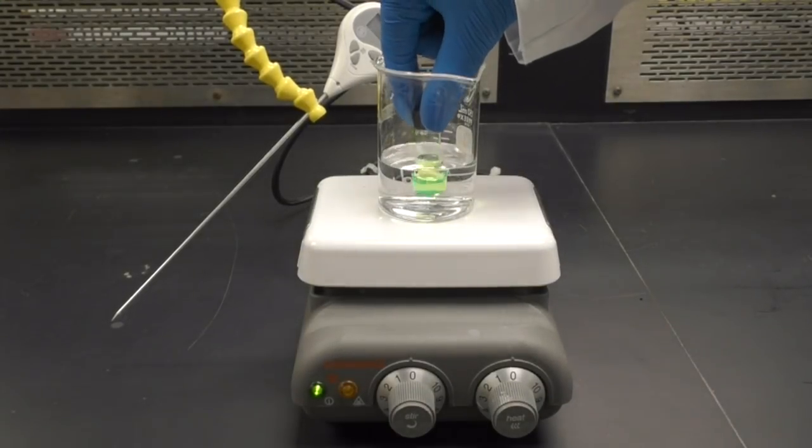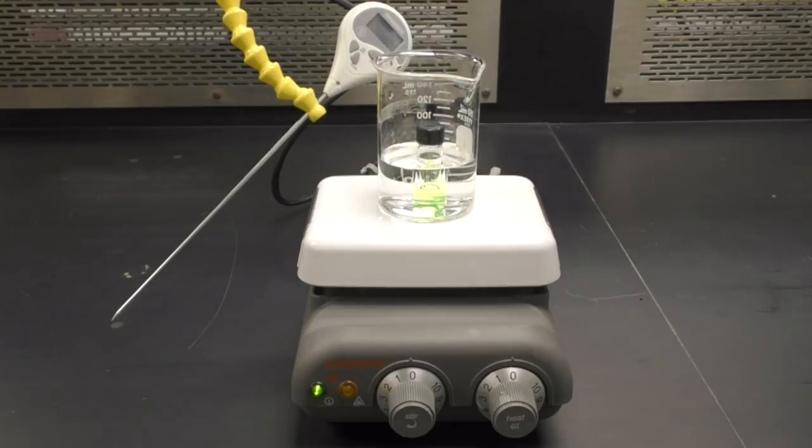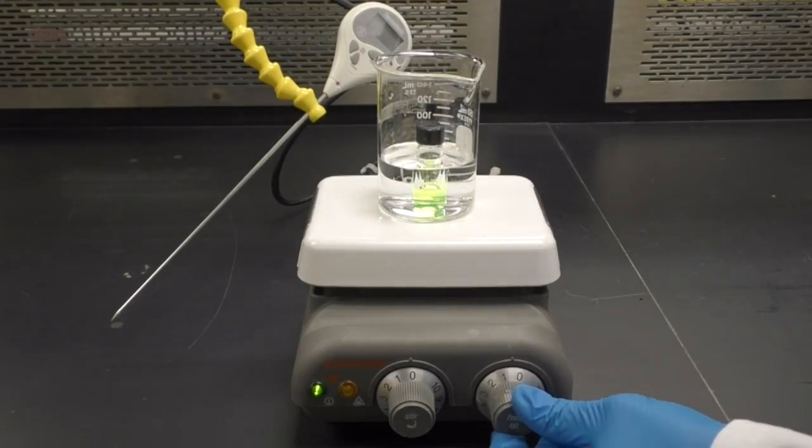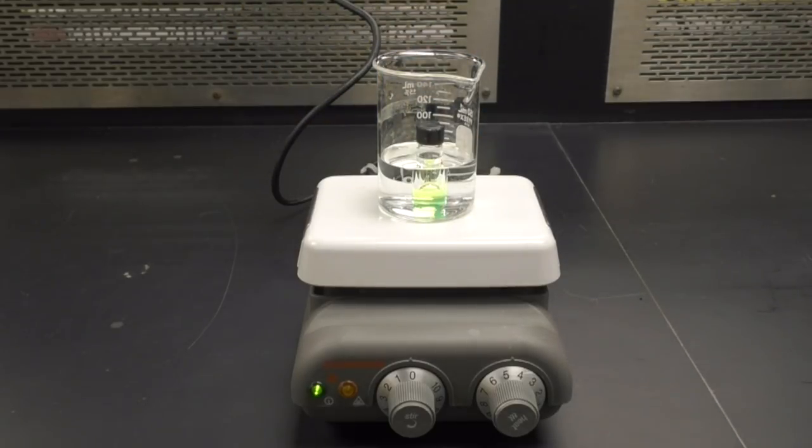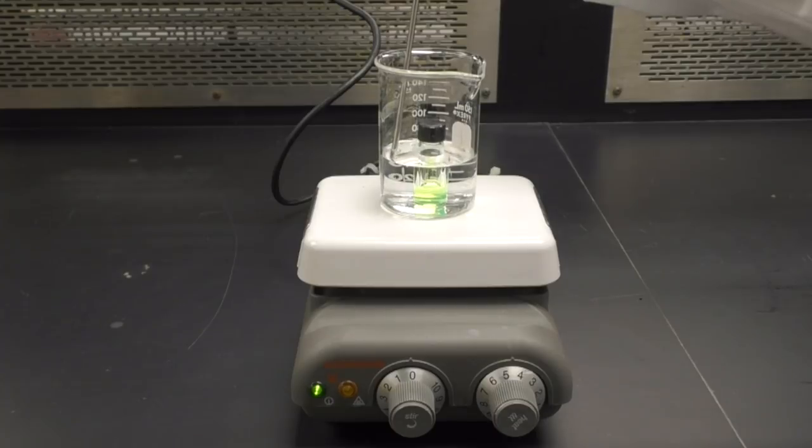For heating, you will need to fill a 150 milliliter beaker halfway with water and place your vial into the beaker so the bottom of the vial contacts the bottom of the beaker. You should also use a digital thermometer to monitor the temperature of your hot bath.